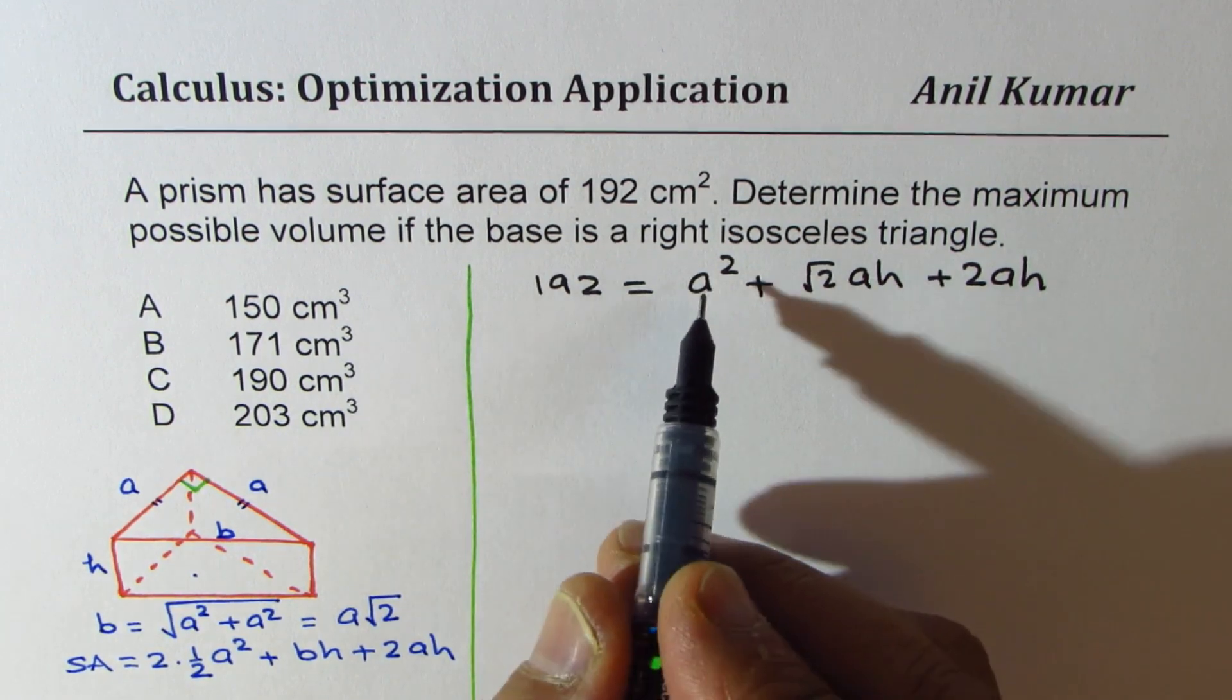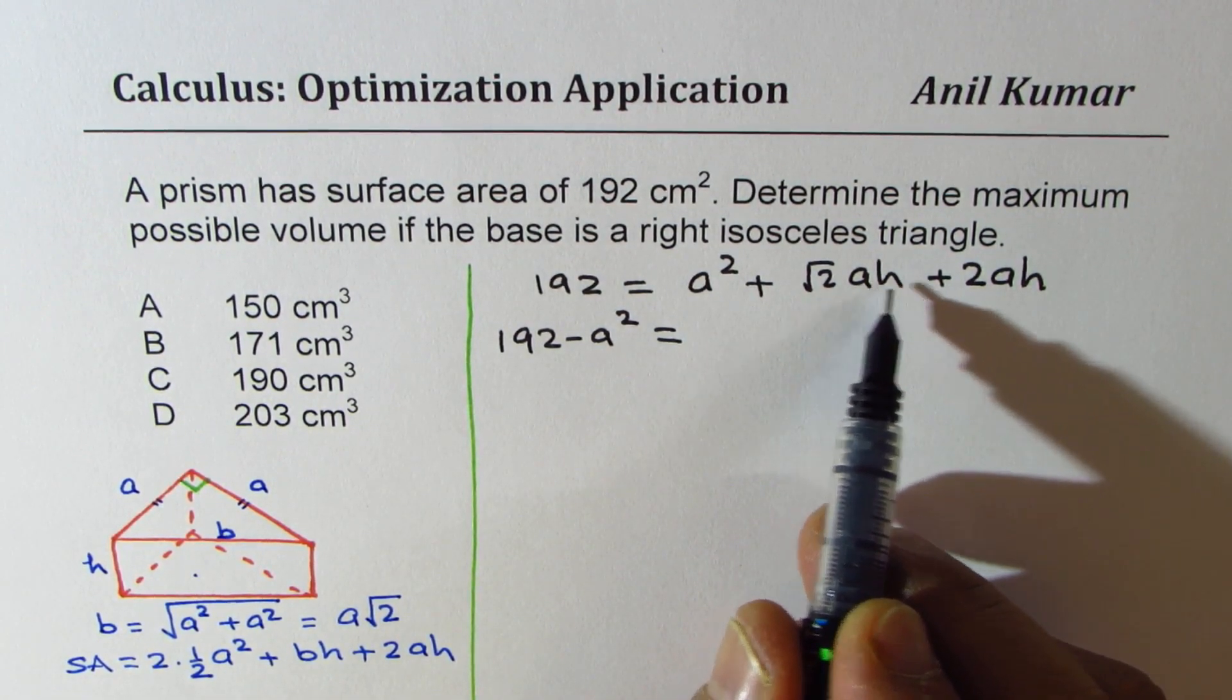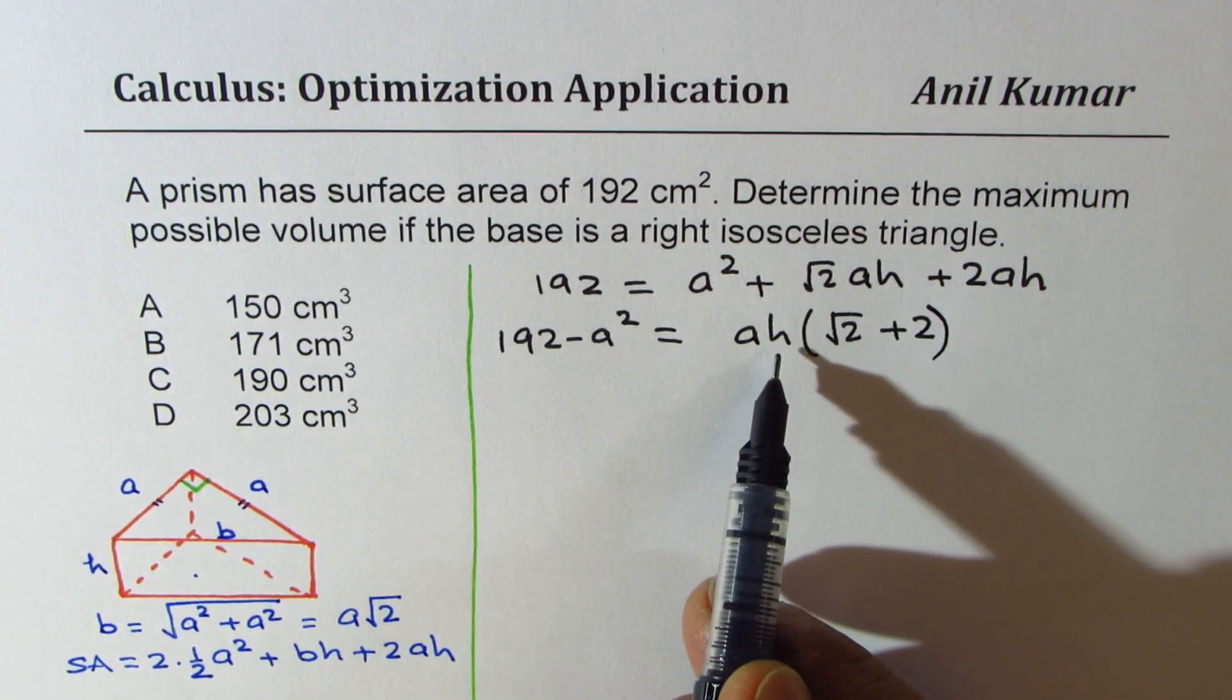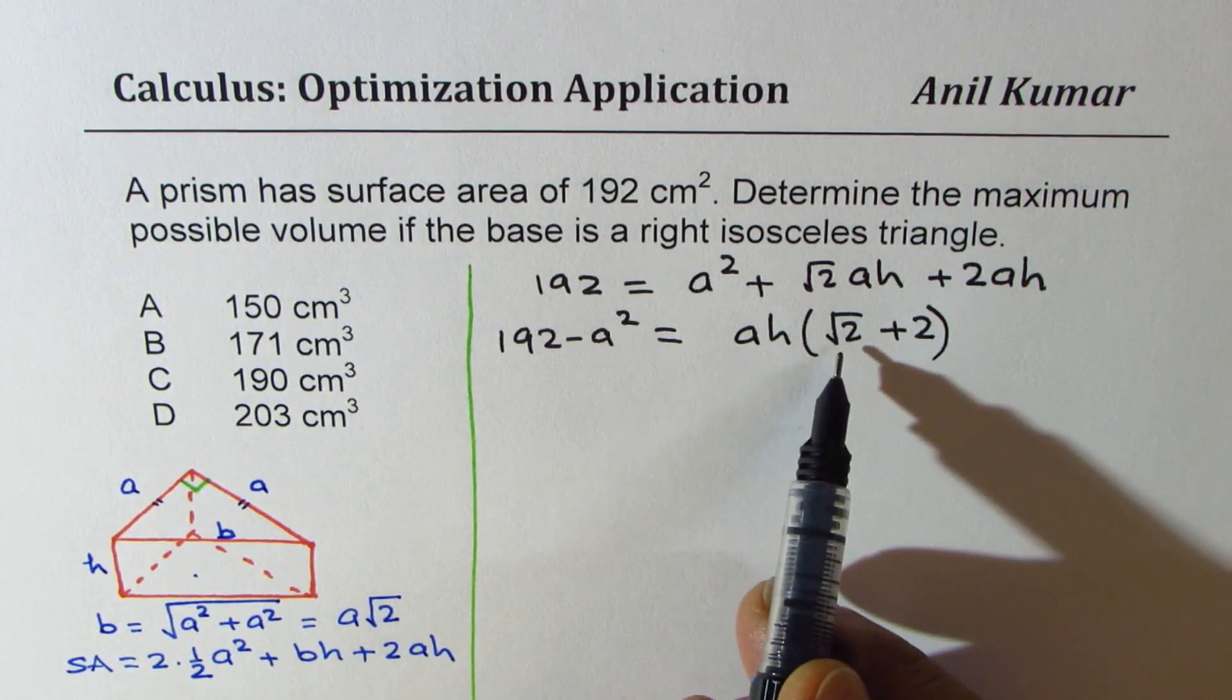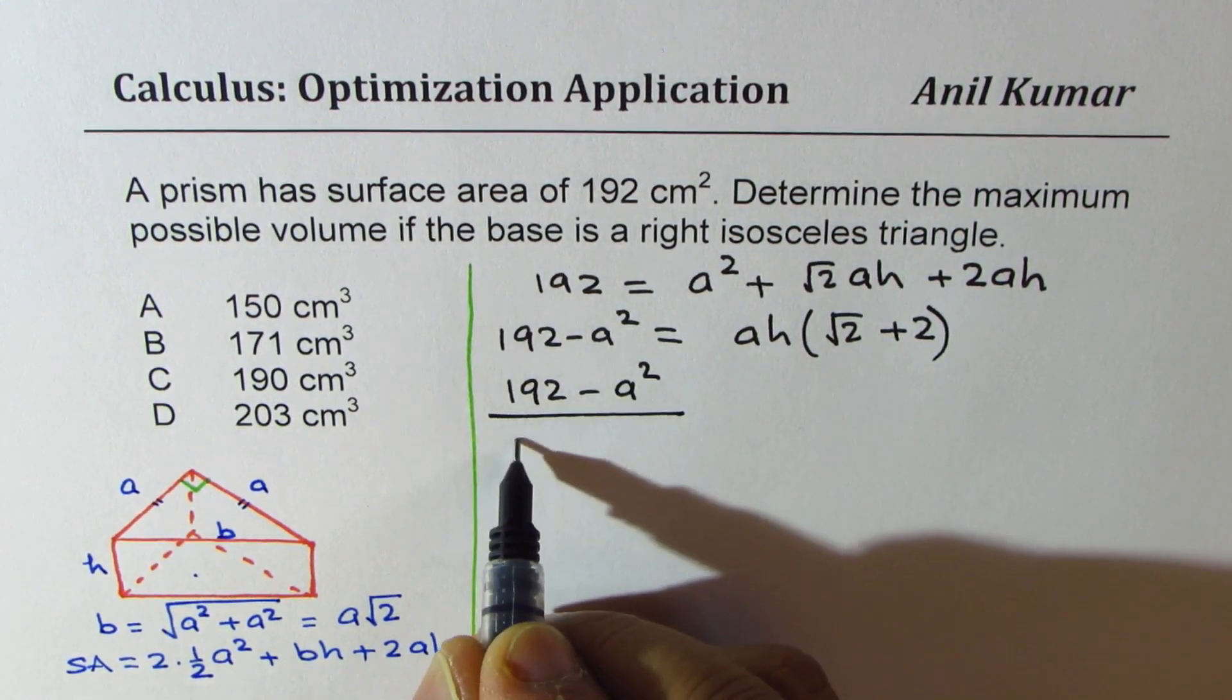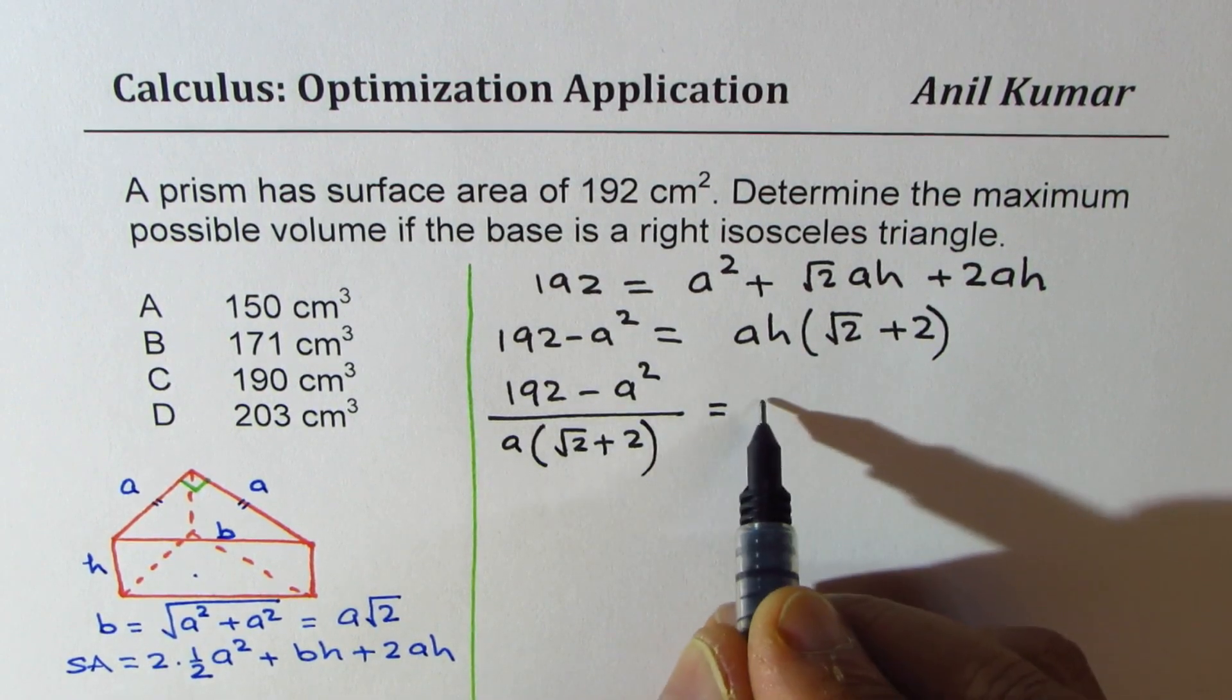So that gives us let's write this as 192 minus a square equals. Now in this formula we can actually take ah common. So if I take ah common I'm left with square root 2 plus 2. So we can isolate h dividing by the term a and square root 2 plus 2. So what we get here is 192 minus a square divided by a times square root 2 plus 2.